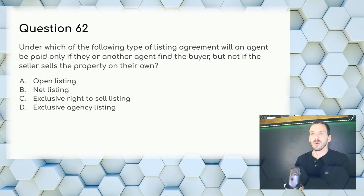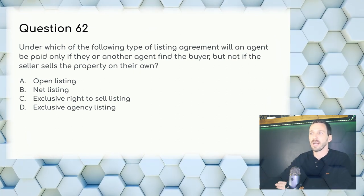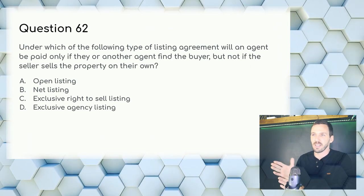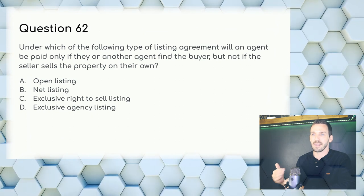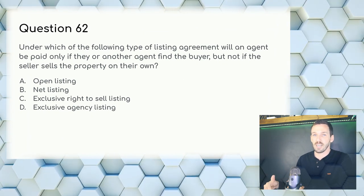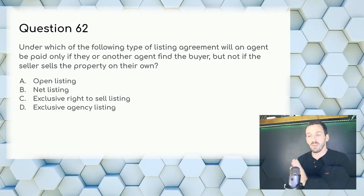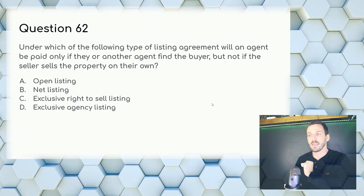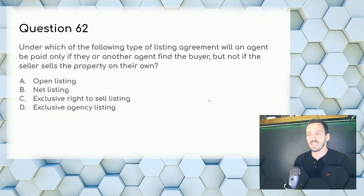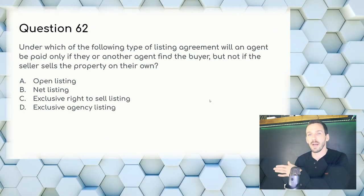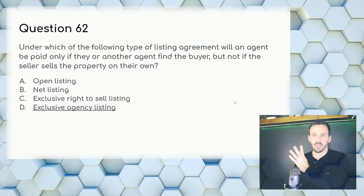Question 62: Under which listing agreement will an agent be paid only if they or another agent find the buyer, but not if the seller sells on their own? Exclusive right to sell is a normal process where the agent gets paid no matter what. Exclusive agency listing is where you get paid unless the owner finds the buyer. Answer: D, exclusive agency listing.